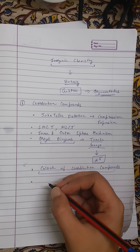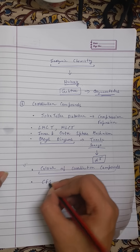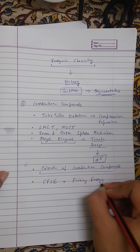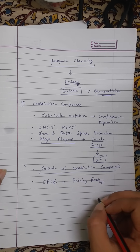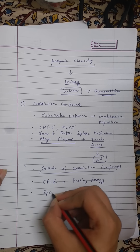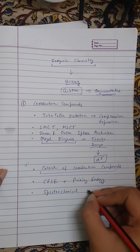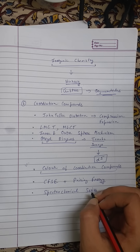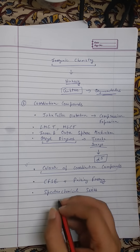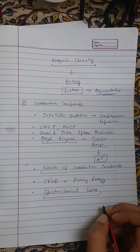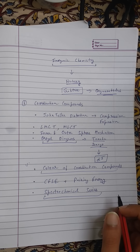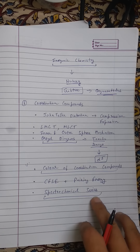You should be able to calculate the crystal field stabilization energy (CFSE) and the pairing energy — both are very important. You should also know the spectrochemical series very well: which ligand is a strong-field ligand and which is a weak-field ligand. Sometimes a seemingly easy question comes in the exam but you haven't heard of the ligand, so you should even know the spectrochemical series for rare ligands.